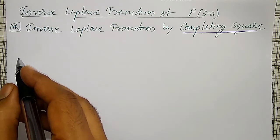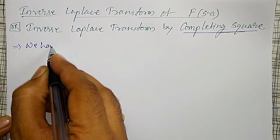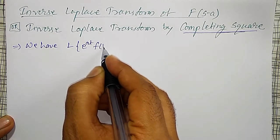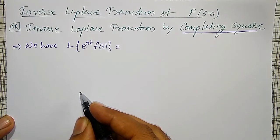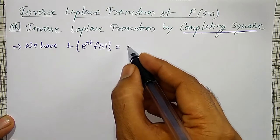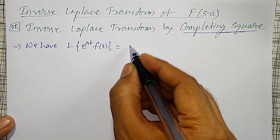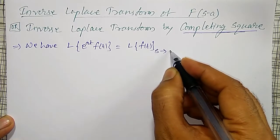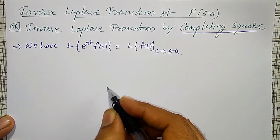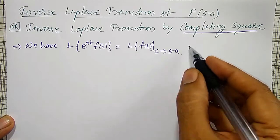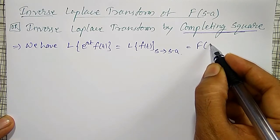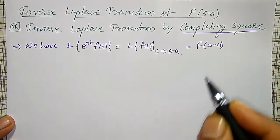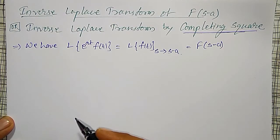For that, we know the property: the Laplace Transform of e to the power at into F of t. That is, the Laplace Transform of e to the power at into F of t is equal to the Laplace Transform of F of t with S replaced by S minus A. So if the Laplace Transform of f(t) is capital F of s, then replacing S by S minus A gives capital F of S minus A. This property we already know from Laplace Transforms.